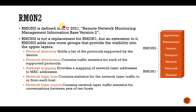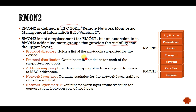RMON 2 is defined in the Remote Monitoring Management Information Base version 2. RMON 2 is not a replacement of RMON 1 but it is an extension — it adds more groups that provide visibility into upper layers. RMON 2 includes nine groups where data is stored, and it particularly maintains data about the upper layers.